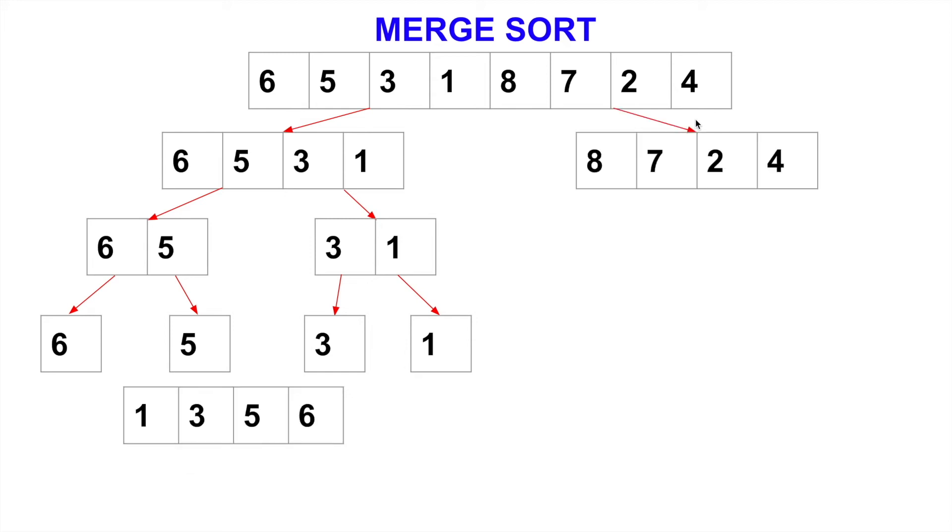Now divide. So we divide 8, 7, 2, 4. We take care of the first half, 8, 7. Divide them, 8, 7. So we'll solve 8 and 7, these two individualized items, 7 and 8. 7, 8. These are the two correct sorted items in order.